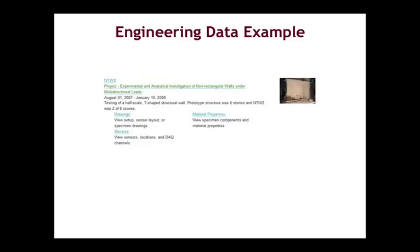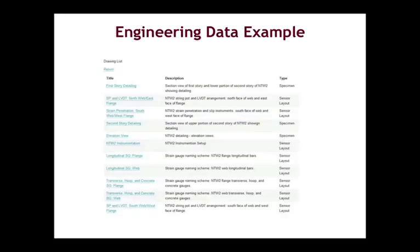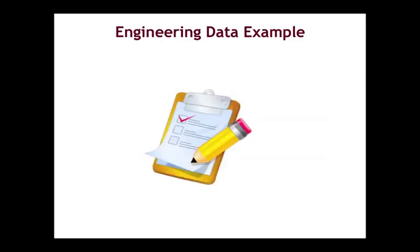If we look at this record, we can see that she includes her sensor data and along with it, drawings and material properties. If we click on the drawings link, we'll see that this includes specimens and sensor layouts. It's important, as you go through your own data inventory, that you consider all the pieces of data that other researchers will need to fully understand your research project.